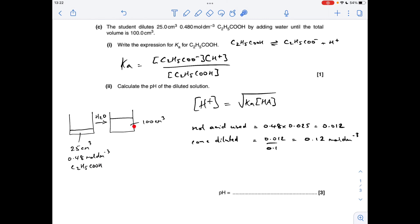But the new volume needs to be factored in. So the concentration of the diluted acid, the moles divided by the volume again, 0.12 moles per decimeter cubed.